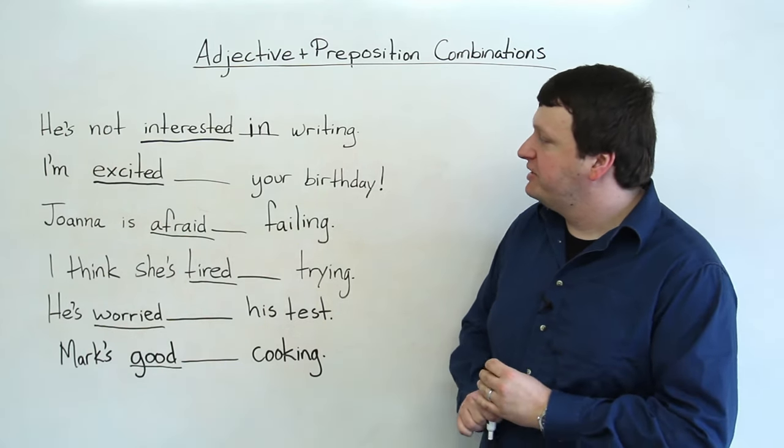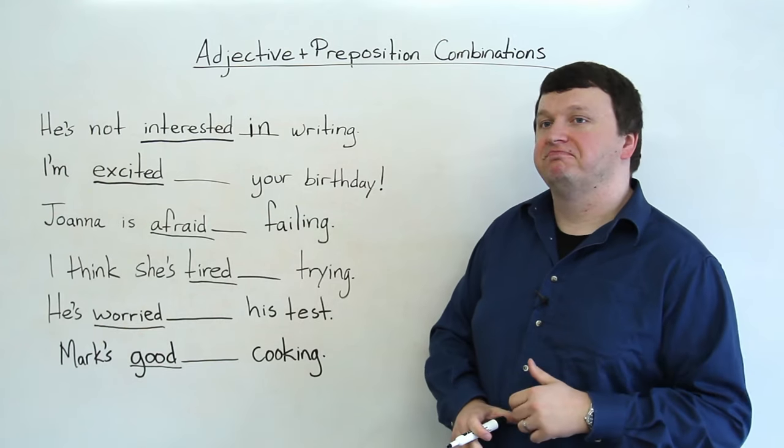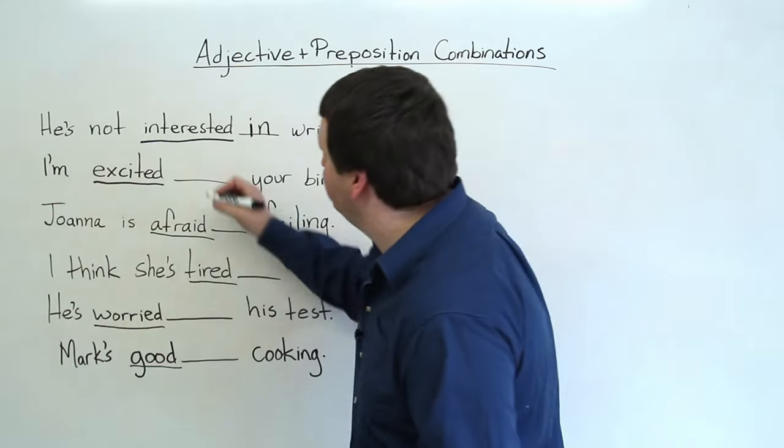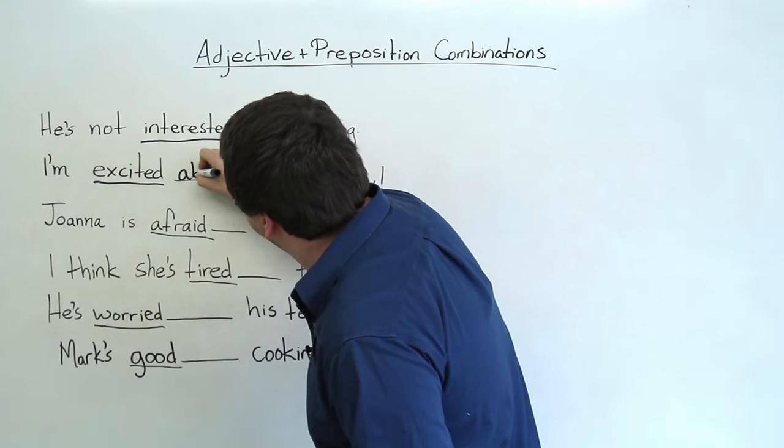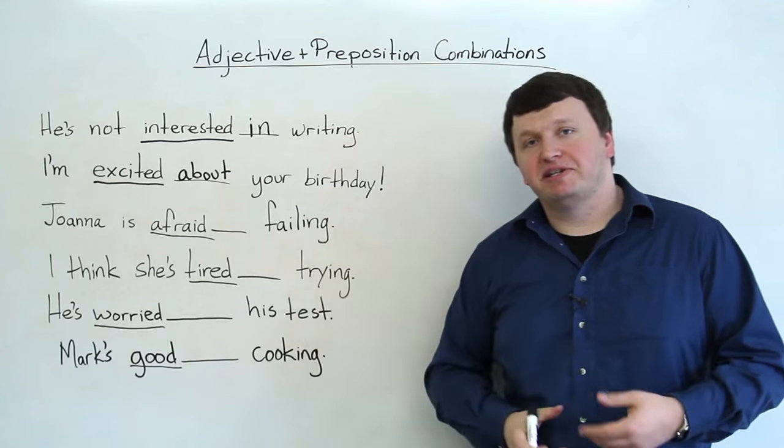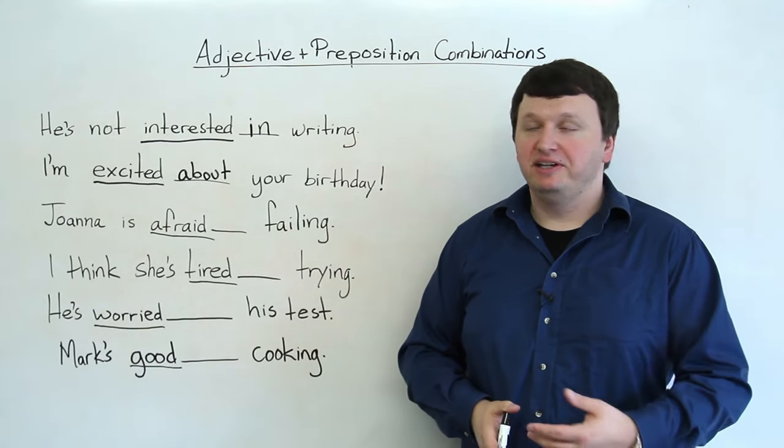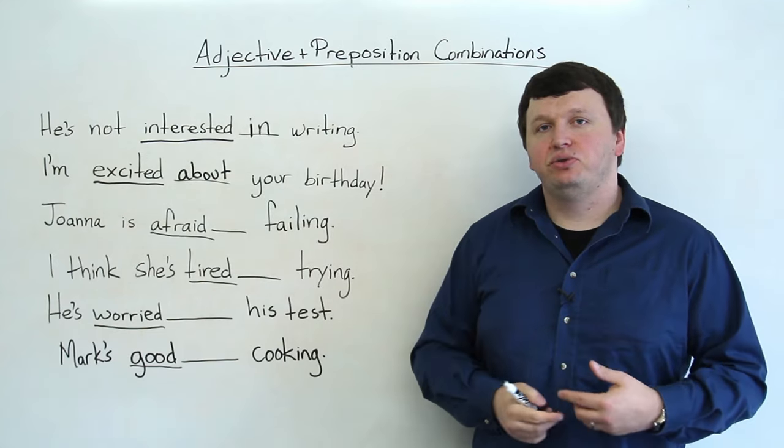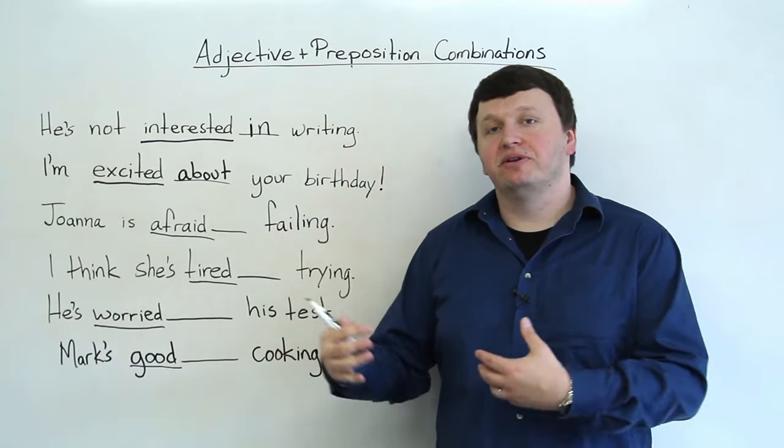Second one, I am excited about your birthday. Okay, you are excited about something, usually. I am excited about your birthday. You can also say, I am excited for your birthday. But the most common preposition here, after excited, is you are usually excited about something.